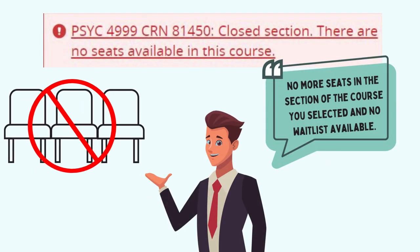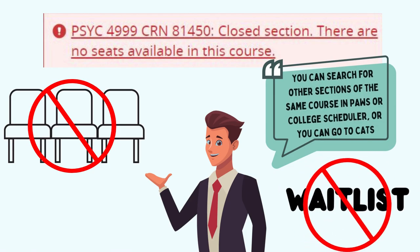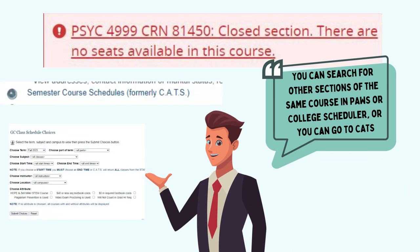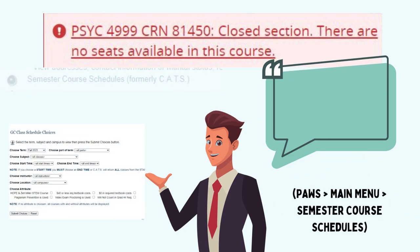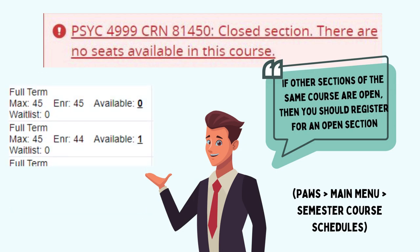This error means there are no more seats in the section of the course that you selected and no waitlist is available. You can search for other sections of the same course in PAWS or College Scheduler, or you can go to CATS, which is a master list of all courses offered in each term. If other sections of the same course are open, register for an open section.